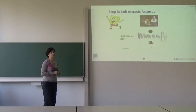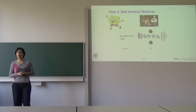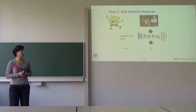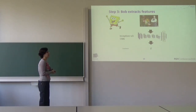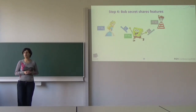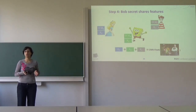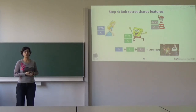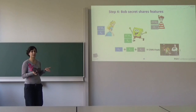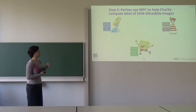The second party is Bob, who is the image holder. He performs the same CNN feature extraction on his image in the plaintext domain — the classifier is public — then secret shares these features additively. All three parties together run an MPC protocol to help Charlie get the final result. They want to identify what is in the picture, so they run private SVM classification together, and in the end the classification label is returned to Charlie — the result is 'florist' in this case.